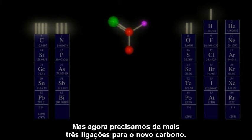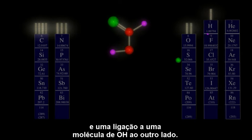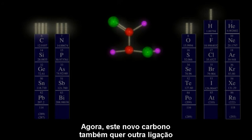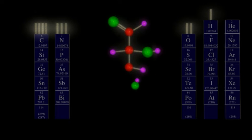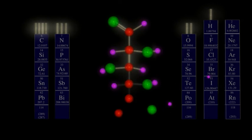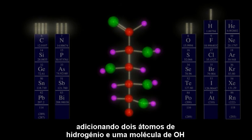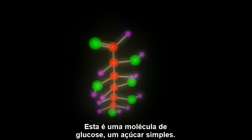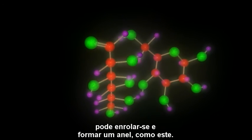But now we need three more bonds for the new carbon. So we stick hydrogen on one side, and a single bond to an OH molecule on the other. Now this new carbon wants another bond, so we give it a third carbon, and keep going. After a total of six carbon atoms, let's end it by adding two hydrogen atoms and an OH molecule like this. This molecule is a molecule of glucose, simple sugar. And in addition to having a chain structure, it can loop on itself to form a ring, like this.